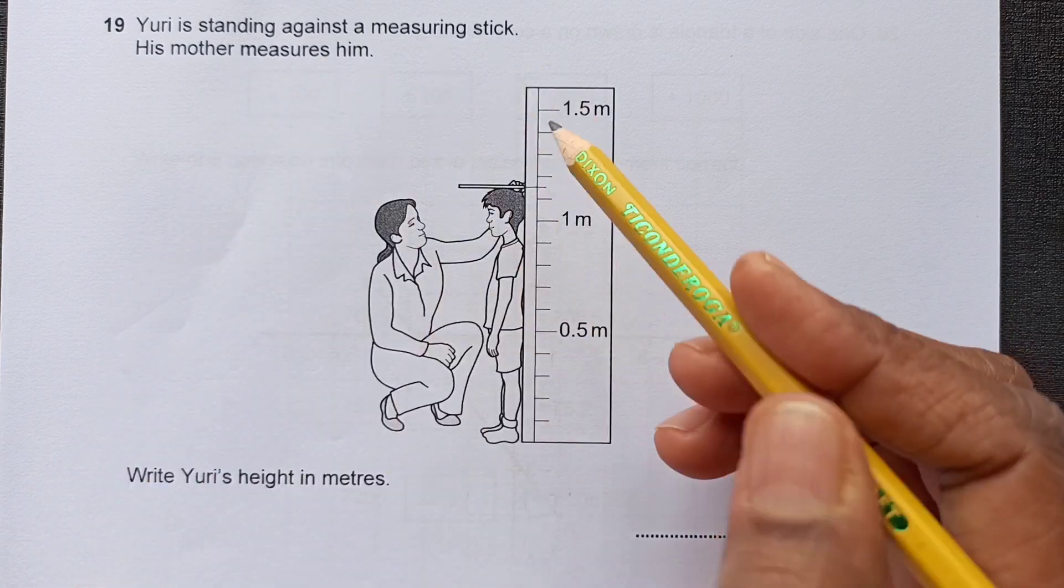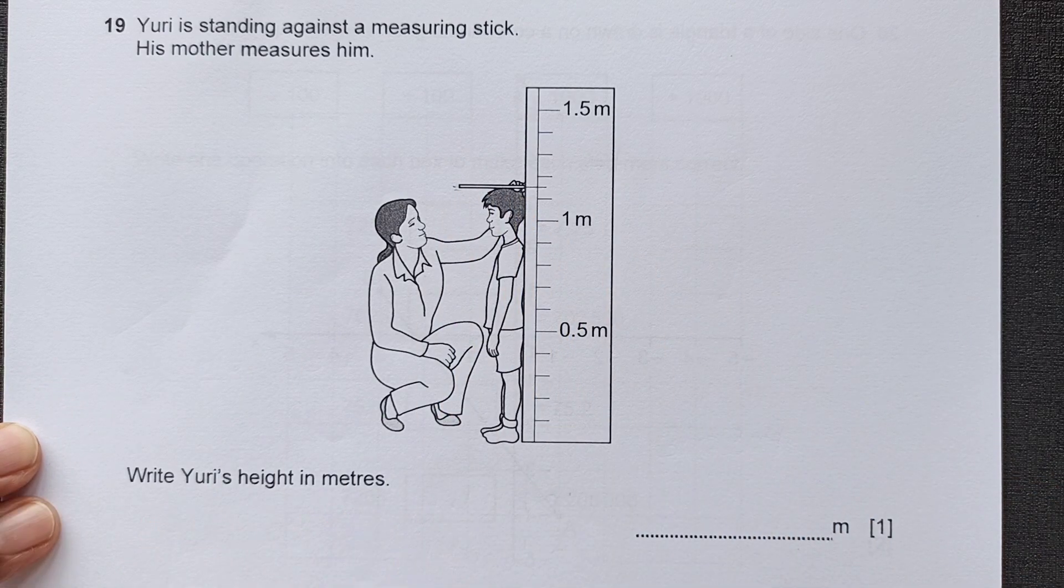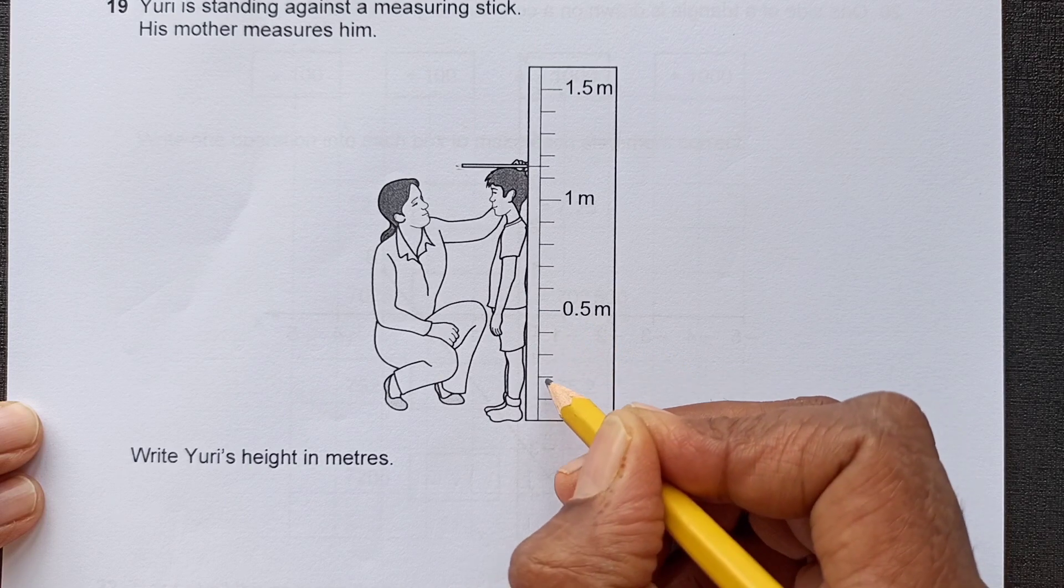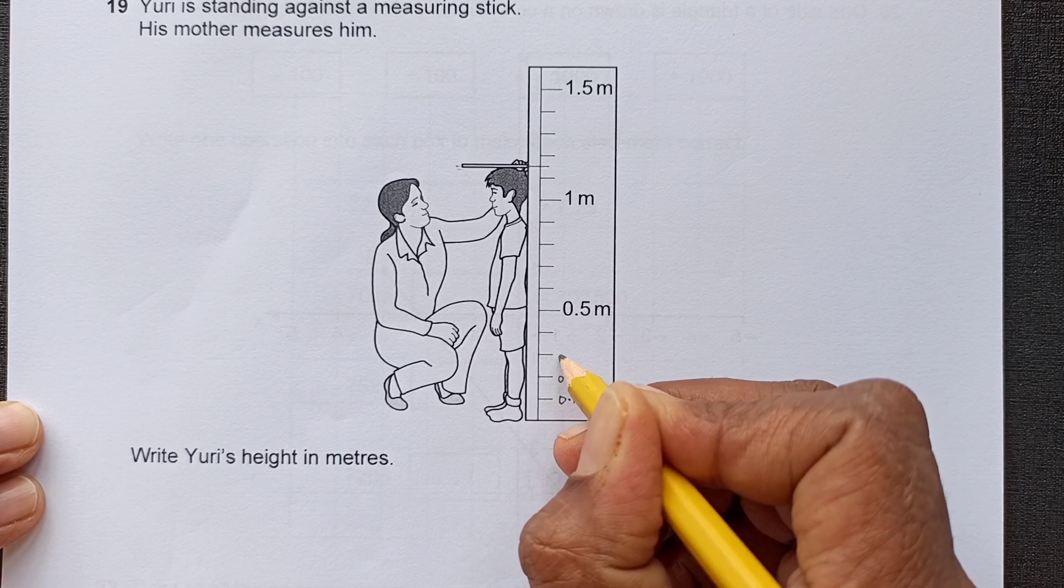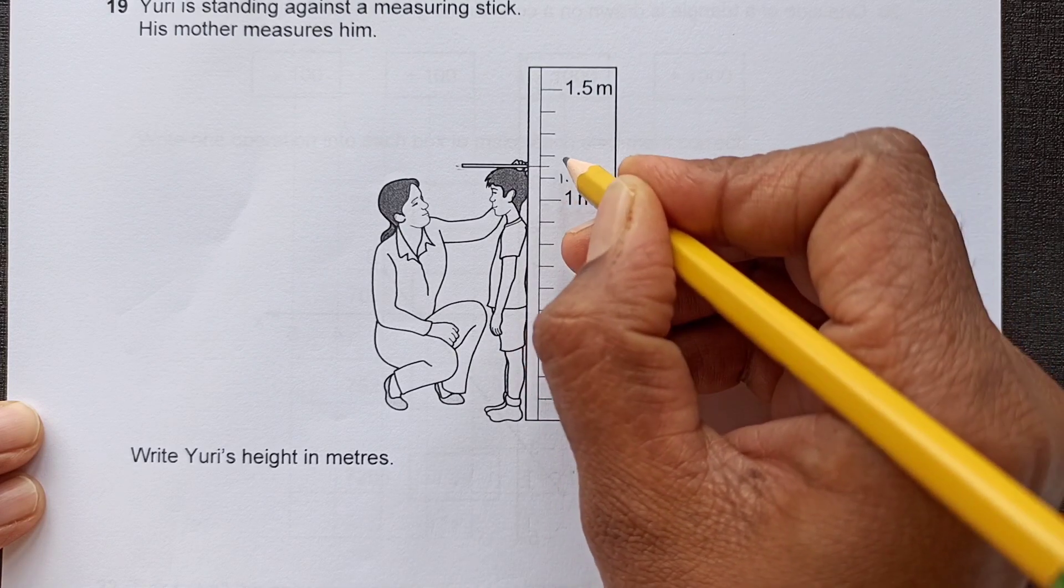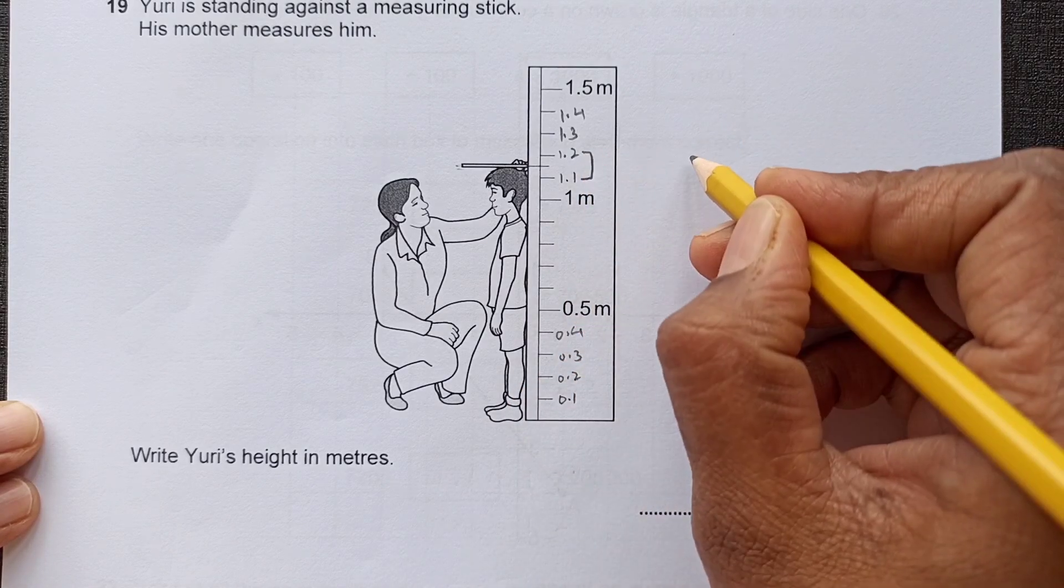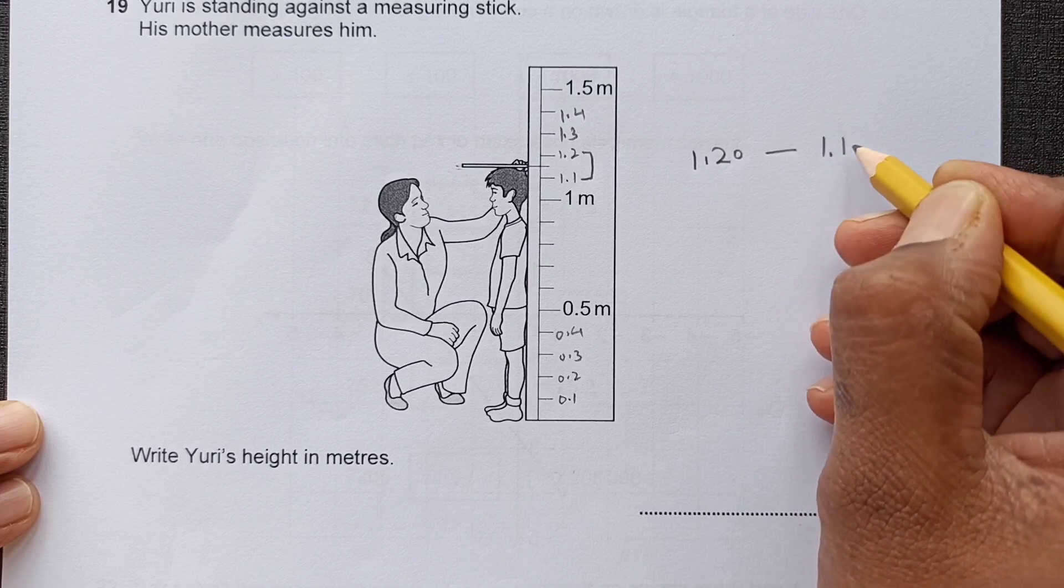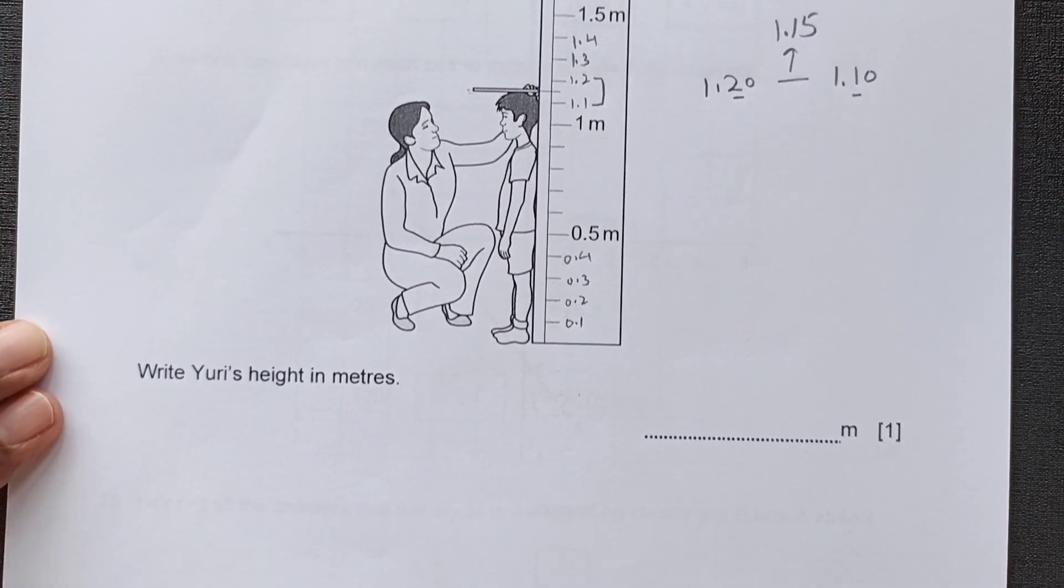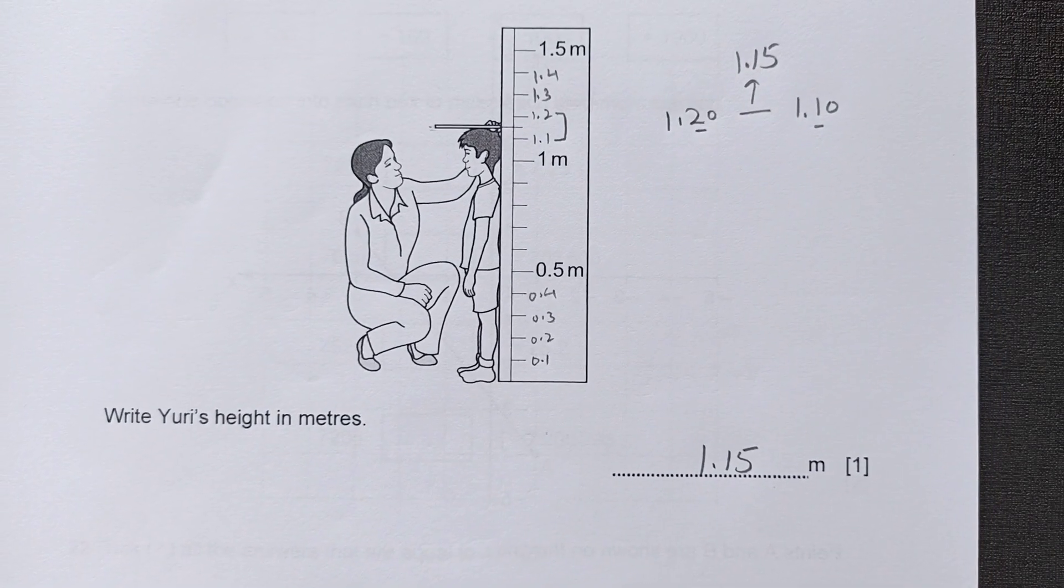Number 19. Yuri is standing against a measuring stick. His mother measures him. Here is the measurement. Write Yuri's height in meters. The scale is given in meters. So we can see here easily we have 5 sections: 1, 2, 3, 4, and 5. So that means this is 0.1, 0.2, 0.3, 0.4. Similarly, 0.6, 7, 8, 9, 1.0. So this is 1.1, 1.2, 1.3, and 1.4. You can see the height is in the middle of 1.20 and 1.10. So in the middle somewhere, it will be 1.15 in the middle. So that will go in the answer column here, 1.15 meters. The unit is already written, so there is no need to write down the unit in this case.